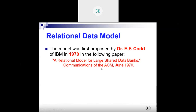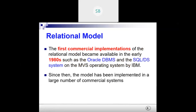It's a very high-standard journal. It was published and he even got the ACM Turing Award for it. The first commercial implementation of the relational model became available in the early 1980s.